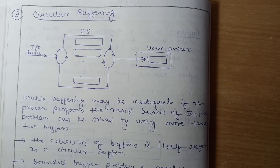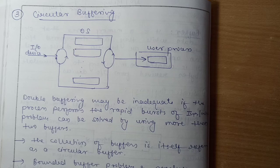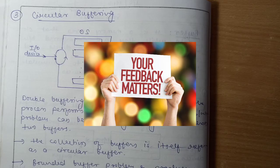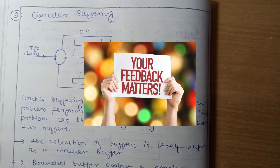So the IO buffering topic is completed. We have learned four methods: no buffering, single buffering, double buffering, and circular buffering. IO buffering is used to match the speed mismatch between IO devices and the CPU or disk during data transfer, using a temporary storage inside memory called a buffer. Hope you liked this video — if you understood it, please hit the like button. Thanks for watching.